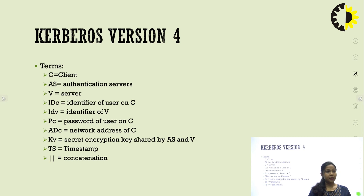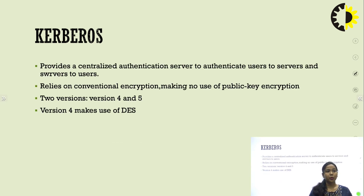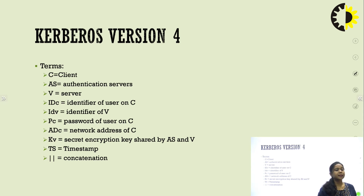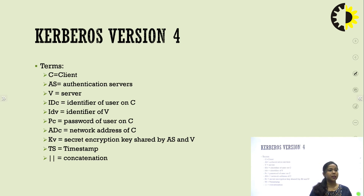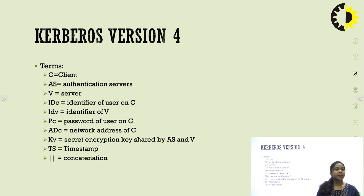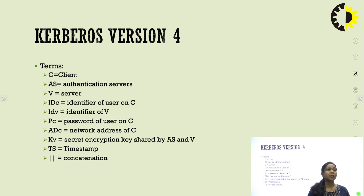In Kerberos version 4, we have some terminology defining keywords and their actual meanings. C indicates the client; AS indicates the authentication server; V indicates the server. IDC is the identifier of the user on C; IDV is the identifier on V; PC is the password of the user on C; ADC is the network address of C; KV is the secret encryption key shared by AS and V; TS is a timestamp. The double parallel lines represent concatenation of two different fields.